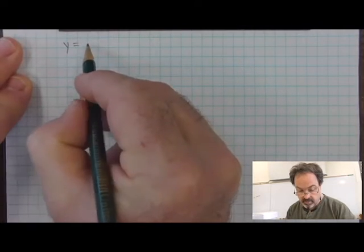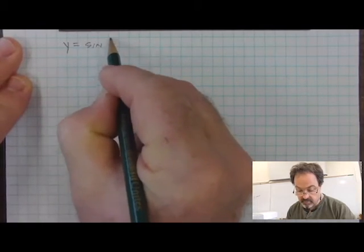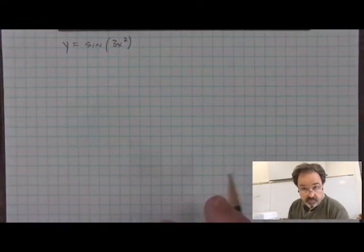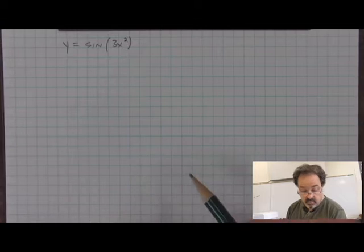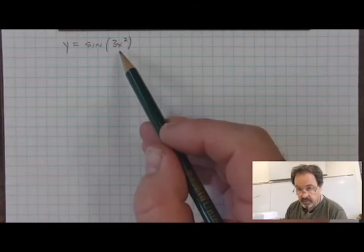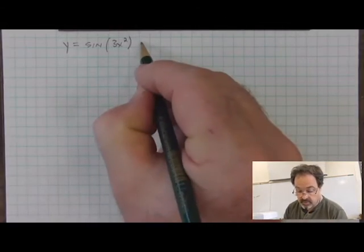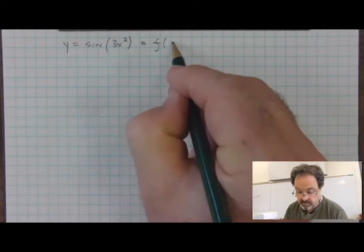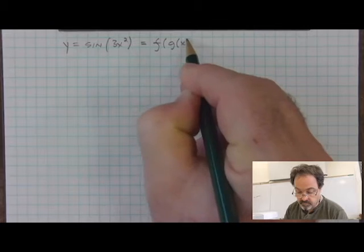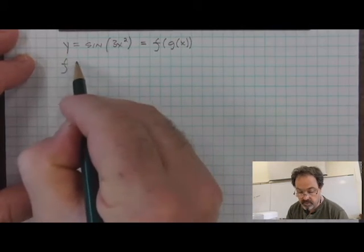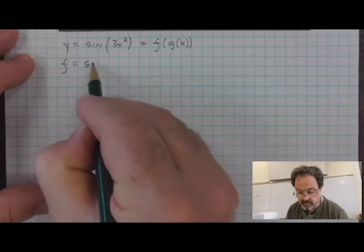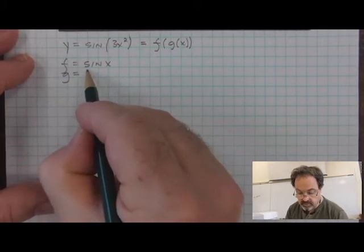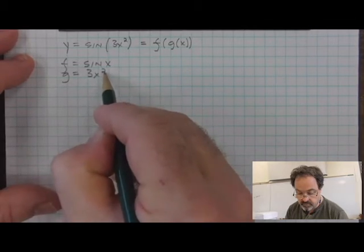I'm going to define y as the sine of 3x squared. This function is a composite function — we're putting 3x squared into the sine function. The structure of a function like this is f composed with g, where the f function is the outside function, sine of x, and g is what we're putting into sine of x.